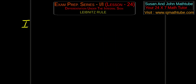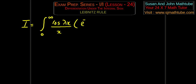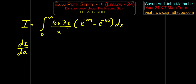The question goes like this: evaluate the integral from 0 to infinity of cos(λx) divided by x, times e to the power minus ax minus e to the power minus bx, dx. I gave you one recommendation: differentiate with respect to a, because we have the parameters a, b, lambda, and the variable of integration is x.